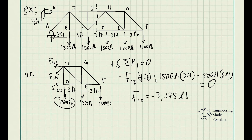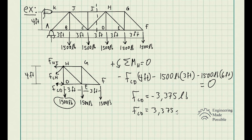Solving gives us negative 3,375 pounds for FCD. The negative sign means our assumption of tension was incorrect — the member is actually in compression. So FCD equals 3,375 pounds in compression.